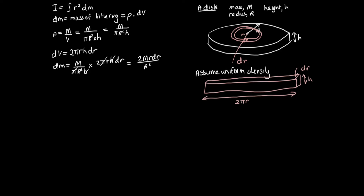Now that we have dm in terms of r, we can substitute into the moment of inertia equation. We sum our little rings from the center (radius 0) to the outer radius R. We have I = ∫₀ᴿ r² · (2Mr dr / R²). Pulling the constant terms out front gives 2M/R² · ∫₀ᴿ r³ dr.